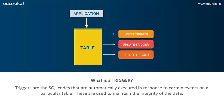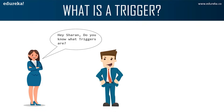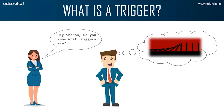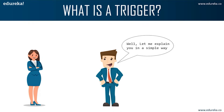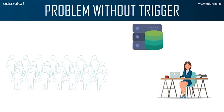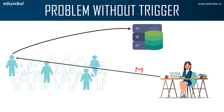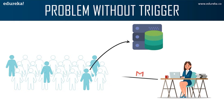Let's try to understand it in a better way. Here we can see Anna is asking Sharon about triggers — imagine a trigger as a falling domino. Anna is a marketing officer in a company. When a new customer's data is entered into the company's database, she has to send a welcome email to each and every new customer. If it is one or two customers, Anna can do it manually, but what if the count is more than a thousand?